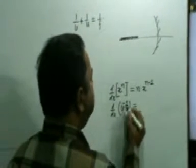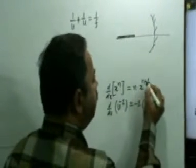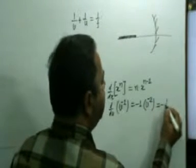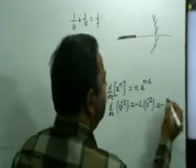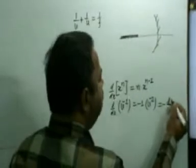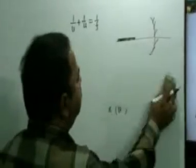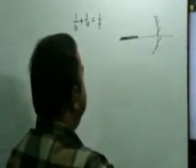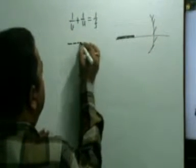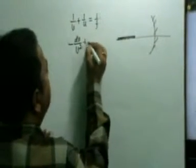This equals minus 1, that is v to the power minus 2, which gives 1/v². So this is -1/v² and this becomes dv. Now differentiating 1/v with respect to v gives us 1/v² into dv.